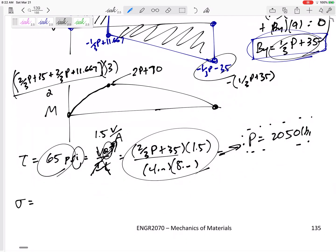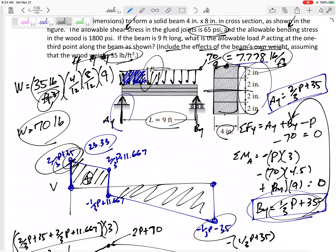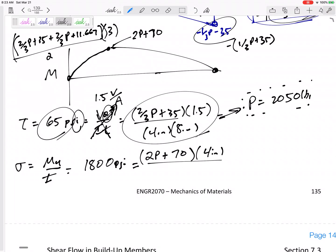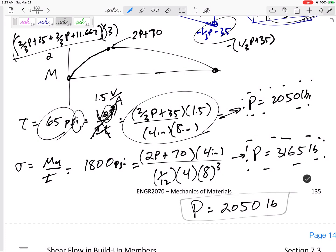Now let me check the maximum bending stress. Bending stress is M Y over I. And so if I don't want it to get up past 1800 psi, set that equal to M. What is the maximum M? 2P plus 70. What is the maximum Y? Where's the maximum bending stress occurring? Very top or very bottom. So the maximum Y would be 4 inches and the I is one twelfth base height cubed. And so what is the maximum force that I can put at that one third location of the beam? A force of 2,050 pounds.